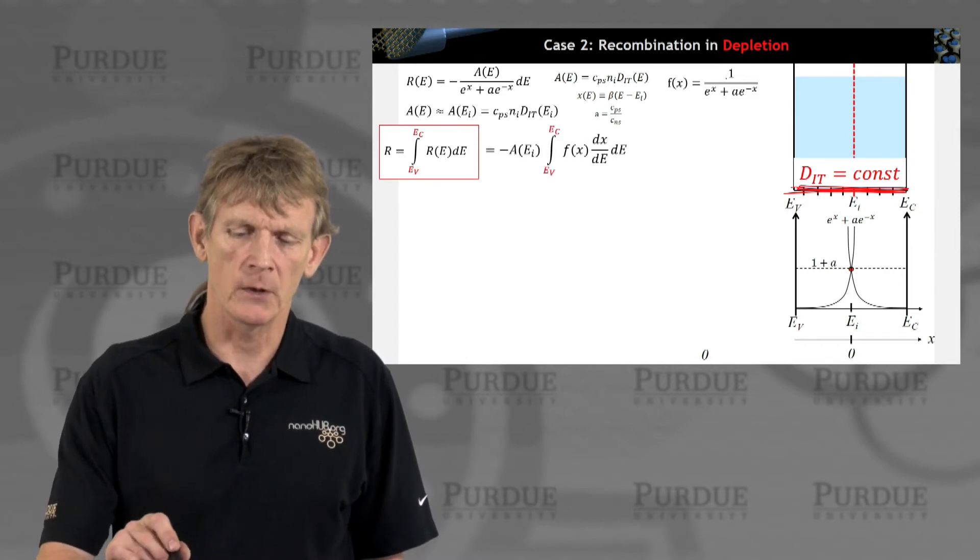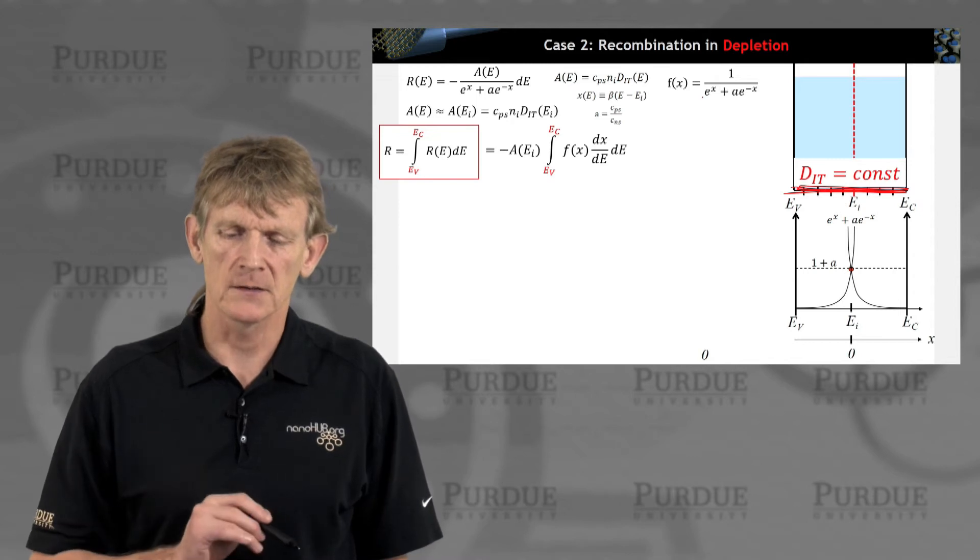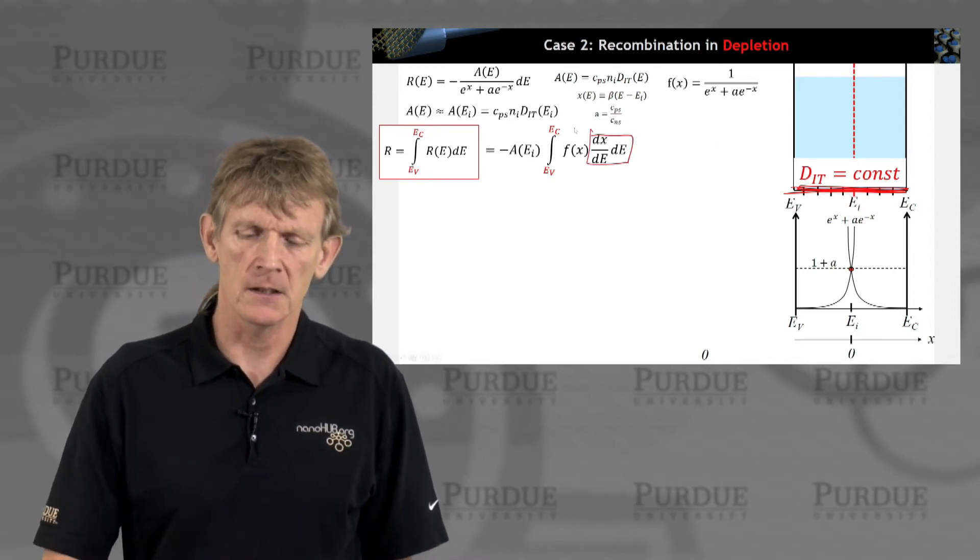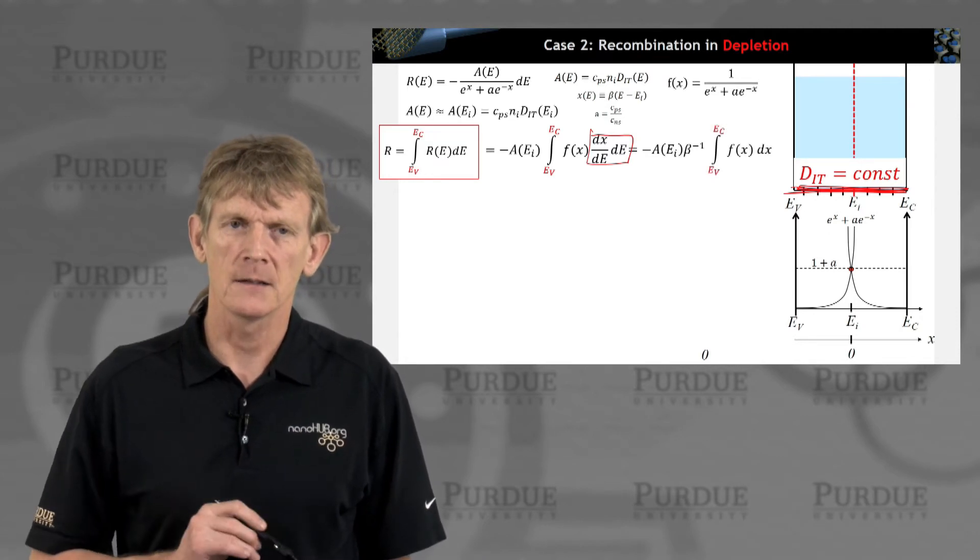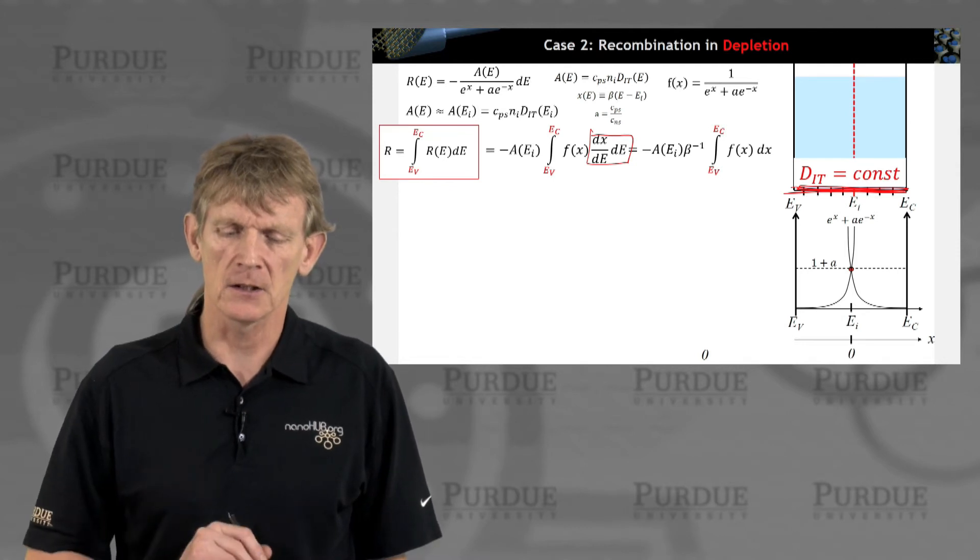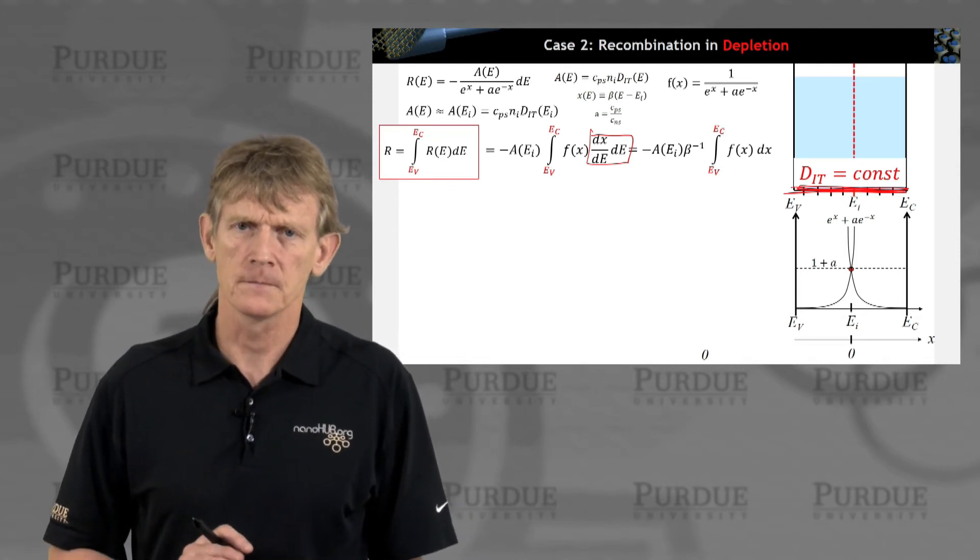I'm really just left with 1 over e to the x plus a to the minus x. I'm going to do my coordinate transformation here. That gives me a beta and an inverse beta. I need to integrate this function now from e c to e v.